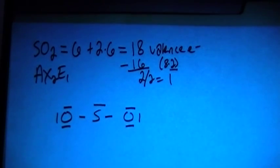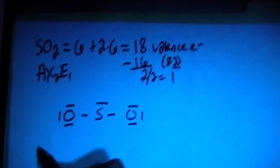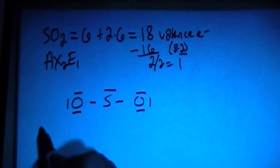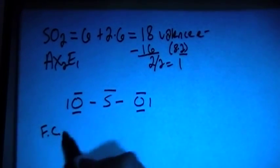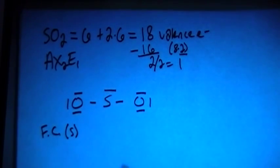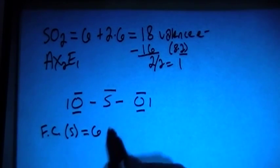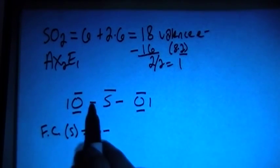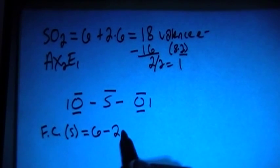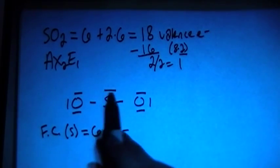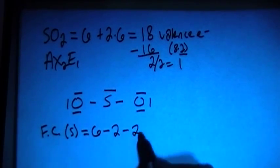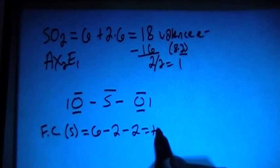At first, seems like it might be right. So we can go ahead and check the formal charges, and we'll actually find out that this is not the correct structure, and you'll see why. So the formal charge on the sulfur is going to be 6, for the 6 valence electrons brought in, minus the number of bonds, 1, 2, minus the number of non-bonding electrons is 2. So that's going to give us a formal charge of plus 2.